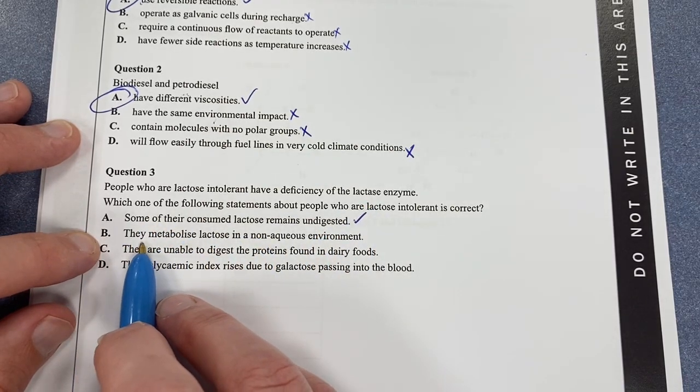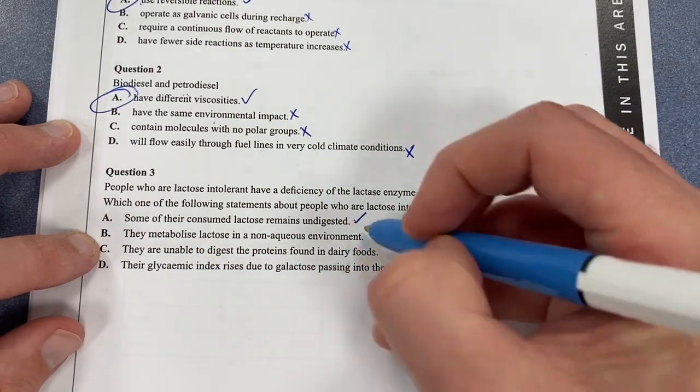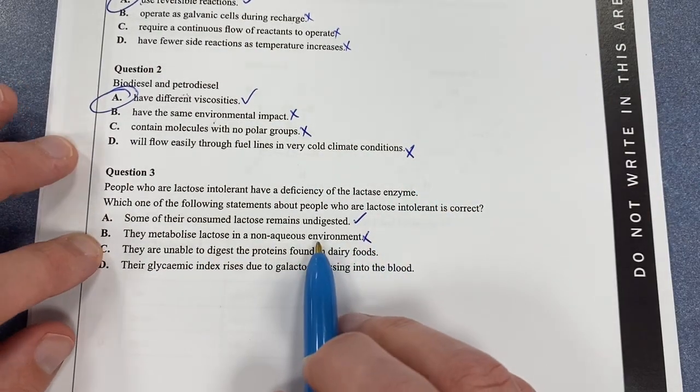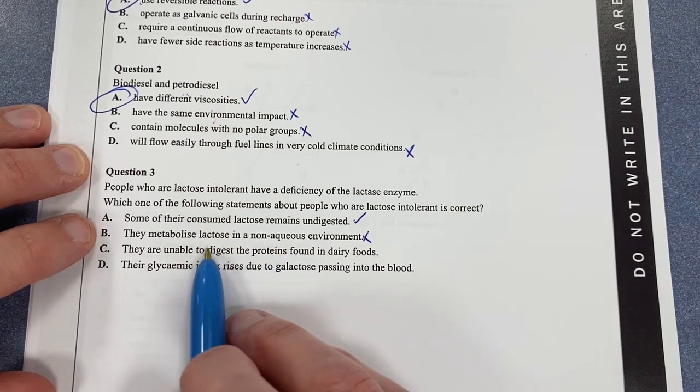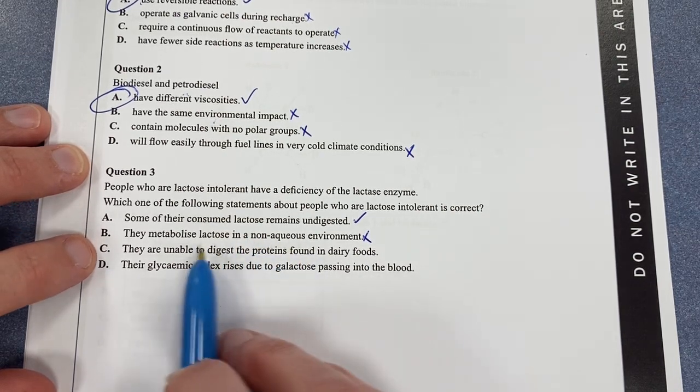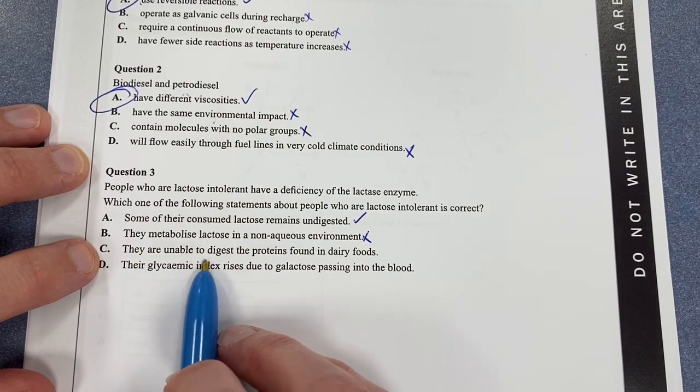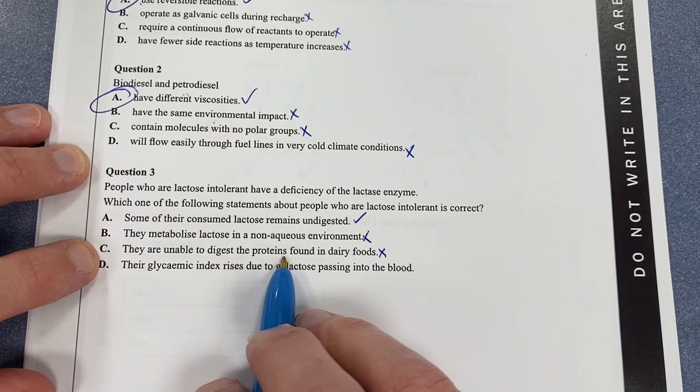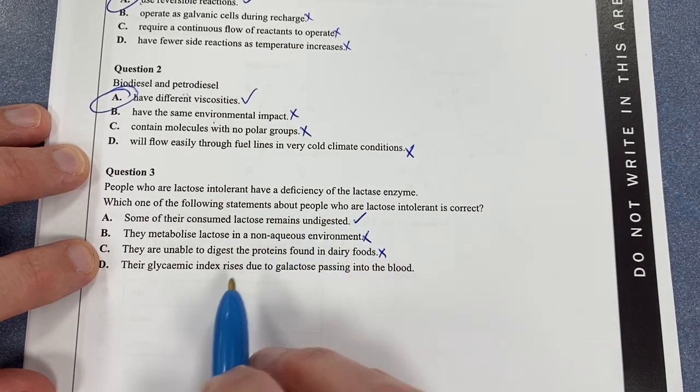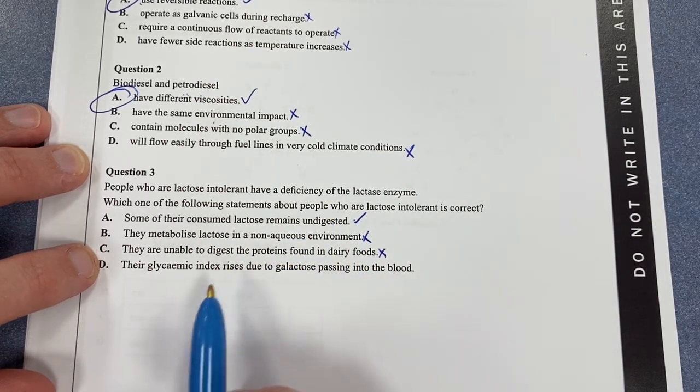Moving on, they metabolize lactose in a non-aqueous environment - that can't be true. Bodies are an aqueous environment. Our blood is an aqueous substance. Everything in our body tends to happen in an aqueous environment. They are unable to digest proteins in dairy foods - they are unable to digest lactose, which is a carbohydrate. It's not the proteins that are the issue.